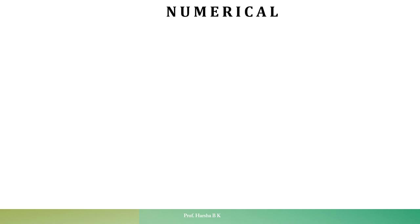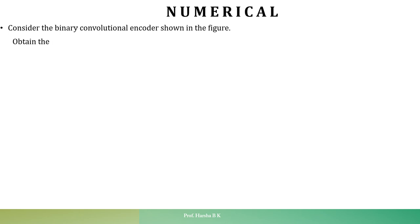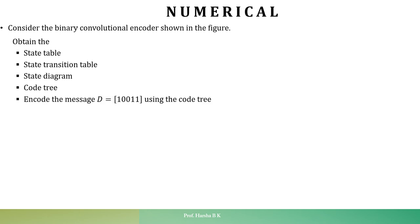Hi all. In this session, we are going to look at how to solve a numerical on convolutional encoder. Given a binary convolutional encoder shown in the figure, we need to obtain the state table, state transition table, state diagram, and code tree. Finally, encode the message D equal to 10011 using the code tree.